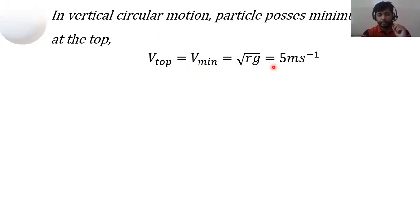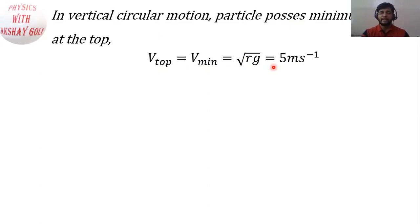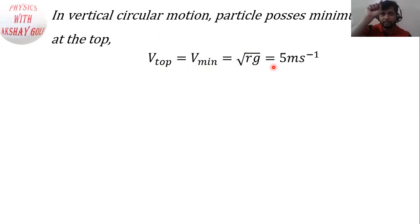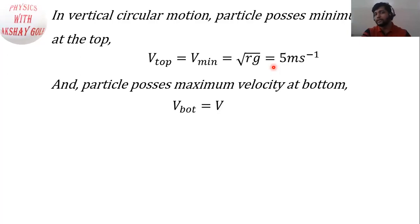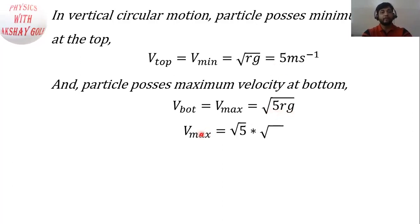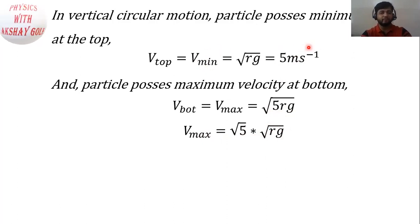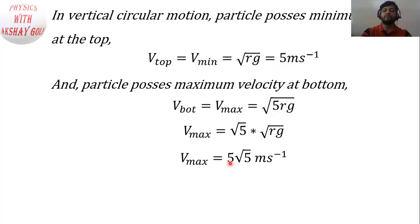Statement P states that the maximum velocity is 5√5 meters per second. In vertical circular motion, the particle possesses maximum speed at the bottom point. The velocity at the bottom is the maximum velocity, equal to √(5rg). Since √(rg) equals the minimum velocity of 5 meters per second, the maximum velocity equals 5√5 meters per second. So Statement P is correct.